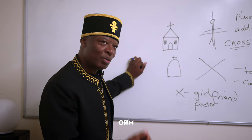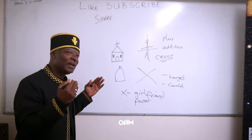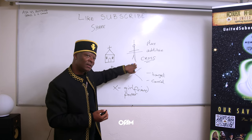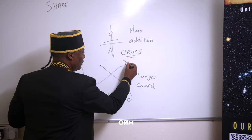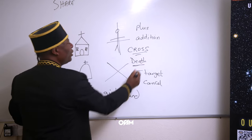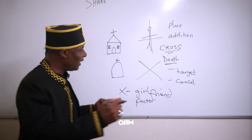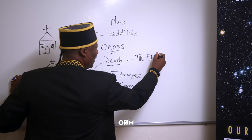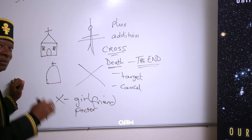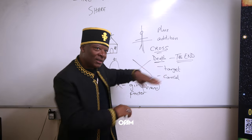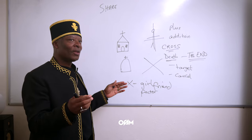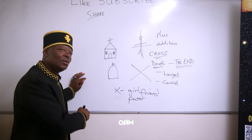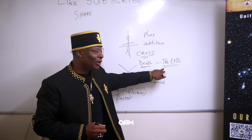They're mentally dead because of the programming. They're not using their own mind — they're just programmed to think. What is death, according to what you've been taught or programmed? The end. I like that — the end, like at the end of the cartoons. Finish, done — if you're dead, that's the end, you're gone.